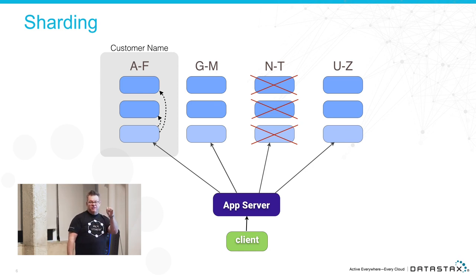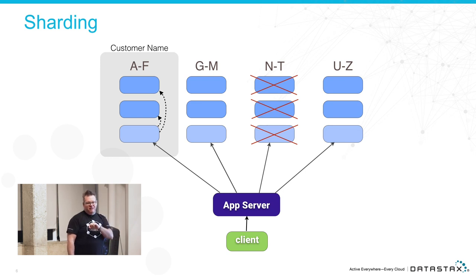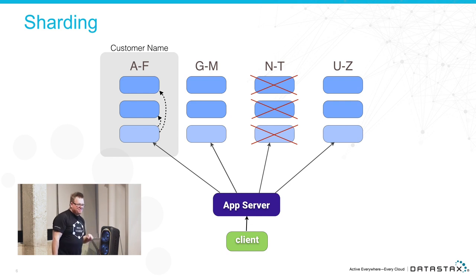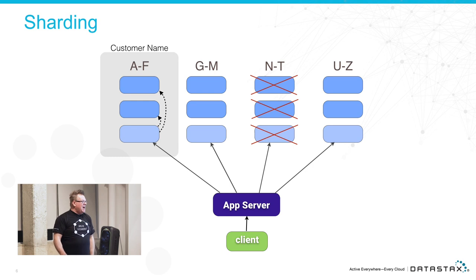Twitter actually got over the hump — remember the fail whale? The fail whale is almost like ancient history now, but Twitter was down more than it was up. Now you can't do that anymore. Apps go offline, people freak out, and they move on to the next one.